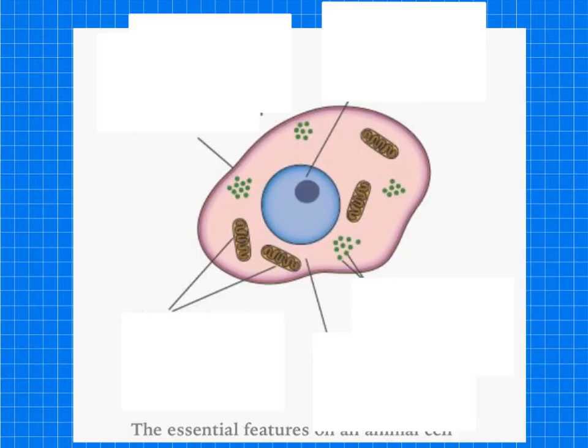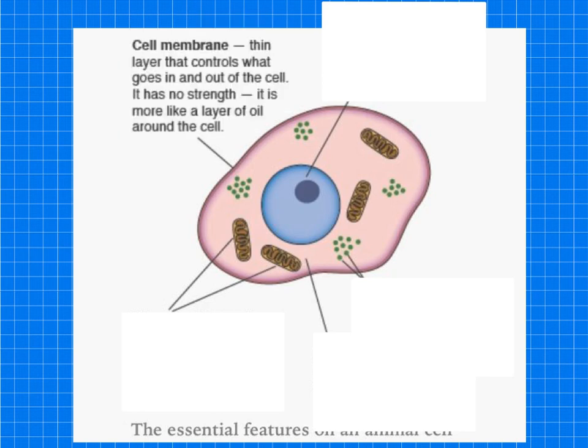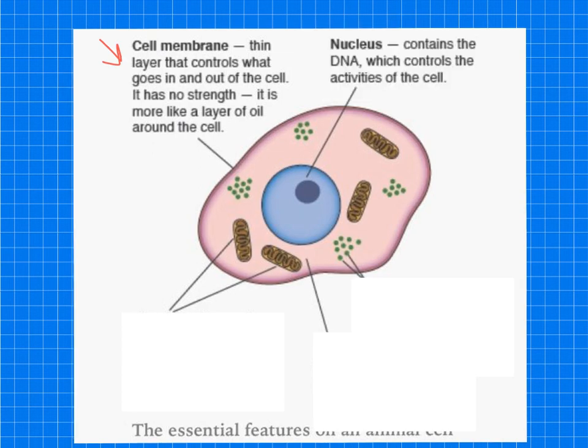Here is an animal cell. Most animal cells have the following parts. They have a cell membrane that is a thin layer that controls what goes in and out of the cells. It's got no strength, it's more like a layer of oil around the cell.